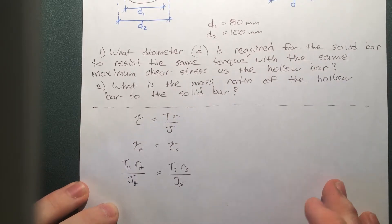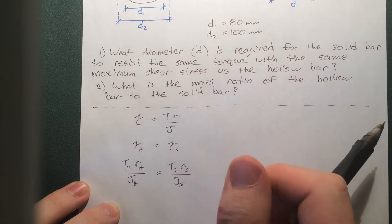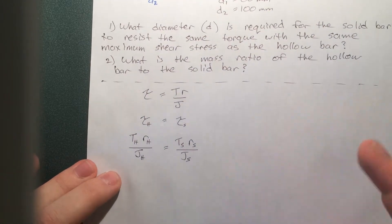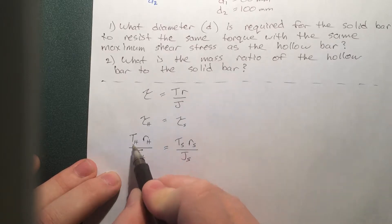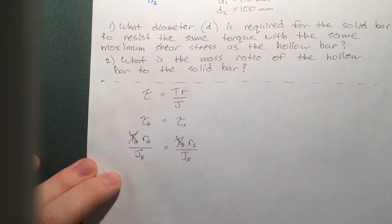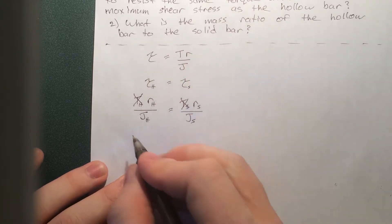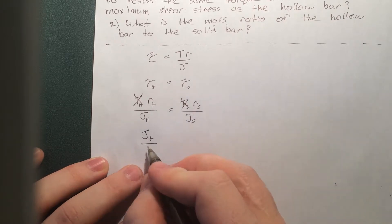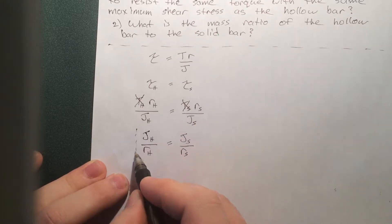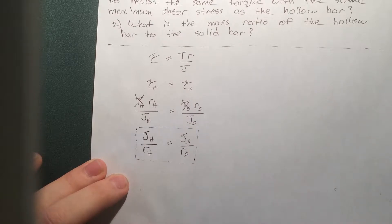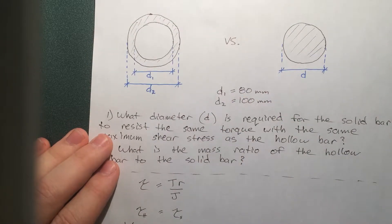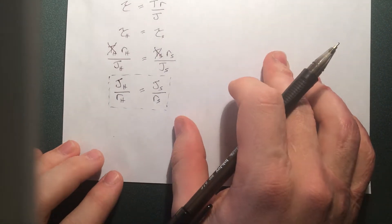Let's simplify. First, we're resisting the same torque — assuming the torque is applied at the very end, at any point along that bar, whether hollow or solid, the internal torque is the same. So the torque terms cancel out. Now I'm going to flip this equation around because it will make our life easier later. I'm going to solve this exclusively in terms of variables and plug values in at the very end.